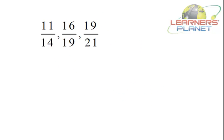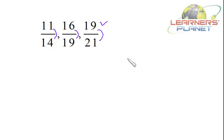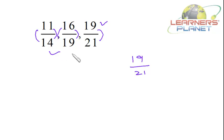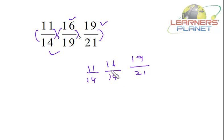Next set: 19/21, and two fractions with difference 3 each. The difference for 19/21 is 2, which is smaller, and its numerator is the highest, so 19/21 is the greatest. Between the two fractions with difference 3, the one with the higher numerator — 16/19 — is greater than 11/14.